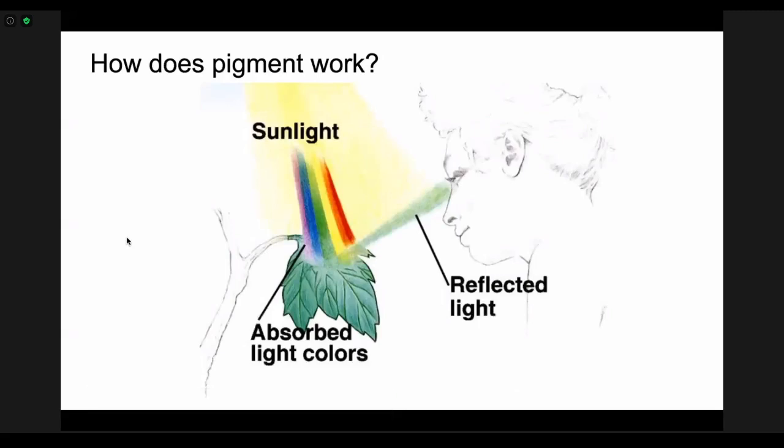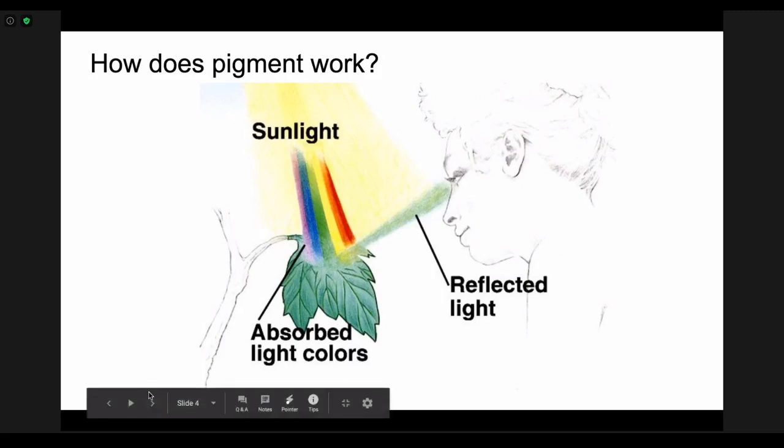So pigment is the first thing that we're going to look at. Pigment is actually a substance that is found in plants and animals. With pigments you have sunlight that's white, all the colors of the rainbow are coming in. They hit this leaf and the pigment in the leaf absorbs all of the colors of the rainbow except for green. The pigment reflects green back to your eyes, which is why the leaf ends up looking green.